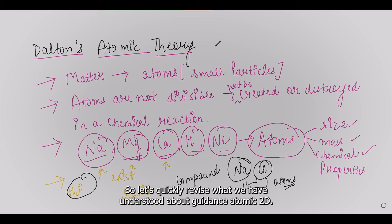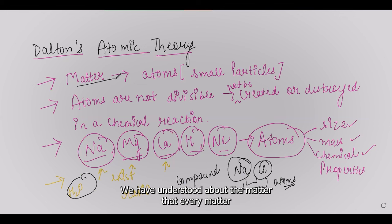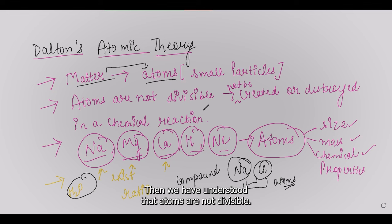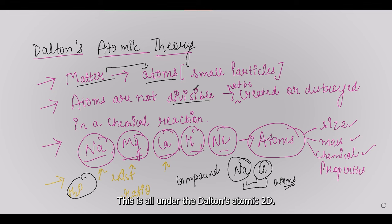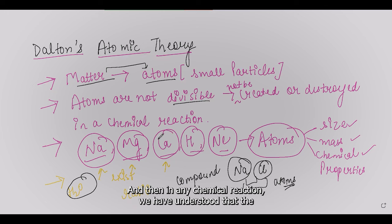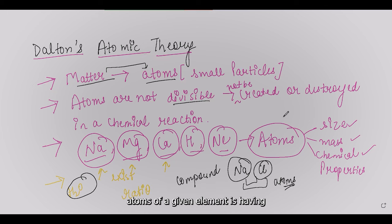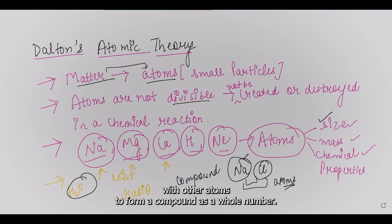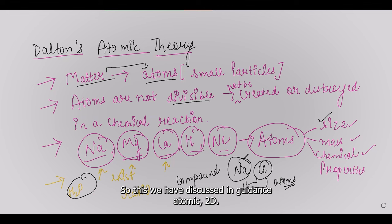Let's quickly revise Dalton's atomic theory. Every matter is made up of very small particles called atoms. Atoms are not divisible — they cannot be created or destroyed. Atoms of a given element are similar in size, mass, and chemical properties. And these atoms combine with other atoms to form a compound in whole number ratios.